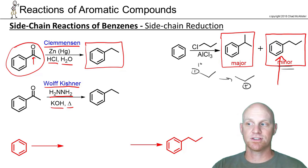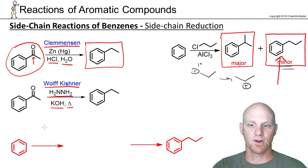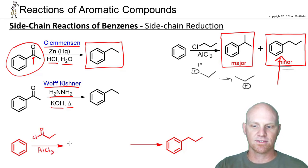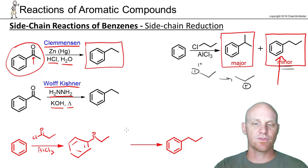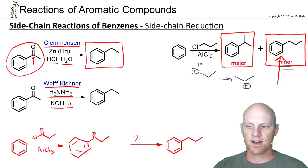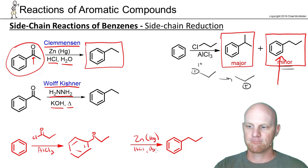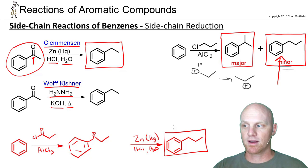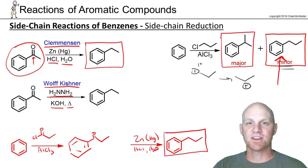Instead, we'd use a Friedel-Crafts acylation, since we don't have to worry about carbocation rearrangements there, and then follow it up with either the Clemmensen or Wolff-Kishner reduction. So if we want to form that exact product, we'd use the corresponding acyl chloride with AlCl₃ as the Lewis acid catalyst. The result is an acylation with no rearrangement, and then following up with the Clemmensen gives us the major product we couldn't get in good yield through alkylation. Really important for synthesis purposes.